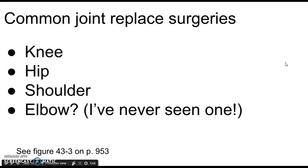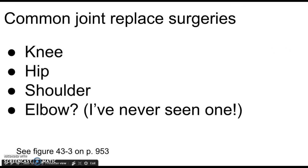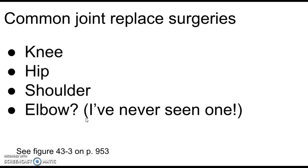According to the book, the four most common joint replacement surgeries are knee, hip, shoulder, and elbow. Knees and hips are seen most frequently in clinical settings — hundreds if not thousands of cases. Shoulders are less common, and elbow replacements are rare, though there is a picture of a replacement elbow on page 953.